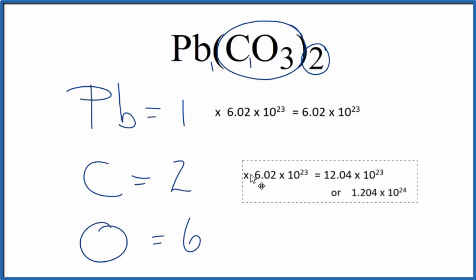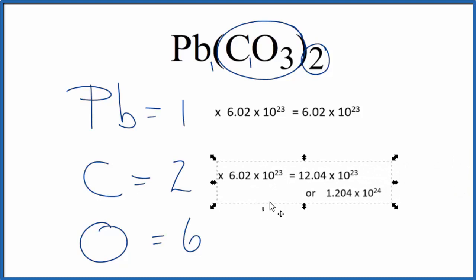Likewise, for carbon, you could multiply that by two, and you would get the number of carbon atoms in lead carbonate. And for oxygen, you'd multiply it by six.